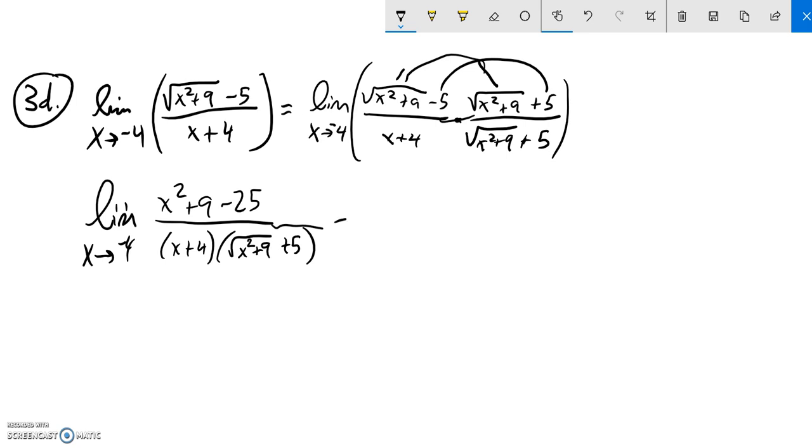So I notice up here, x squared plus nine minus 25, that's x squared minus 16, which is great.